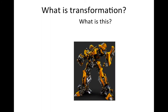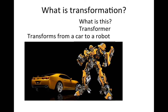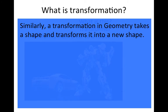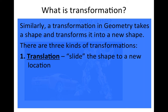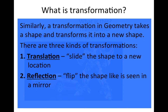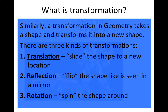What is a transformation? Well, if I ask you what this is, you'll all know that that is a transformer. A transformer gets its name because it transforms from a car into a robot. In geometry, similarly, there are three different types of transformations where a shape transforms from one shape to another. There's a translation that slides the shape from one location to another without changing any orientation. There's a reflection, which flips the orientation so the shape looks like it would in a mirror. And finally there's a rotation that spins the shape around, changing its orientation.